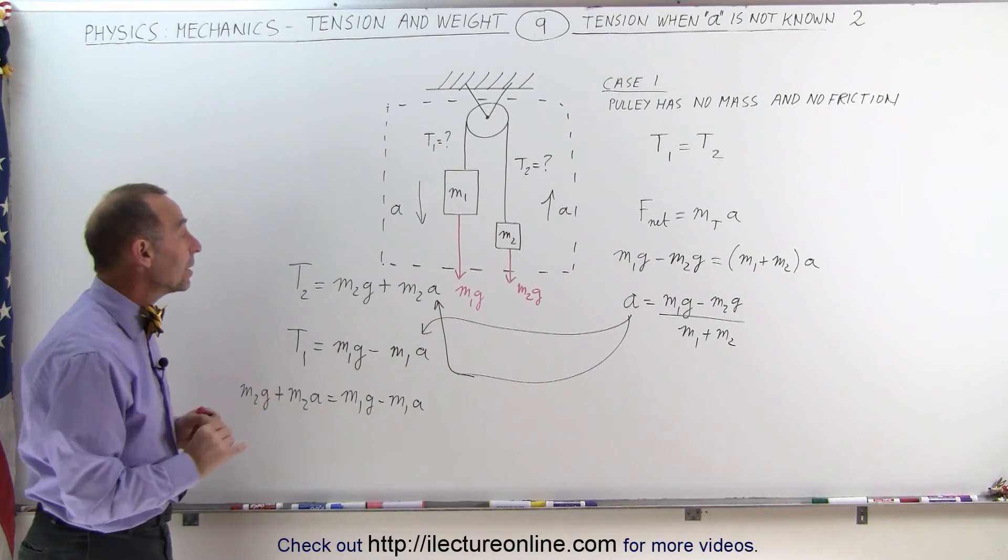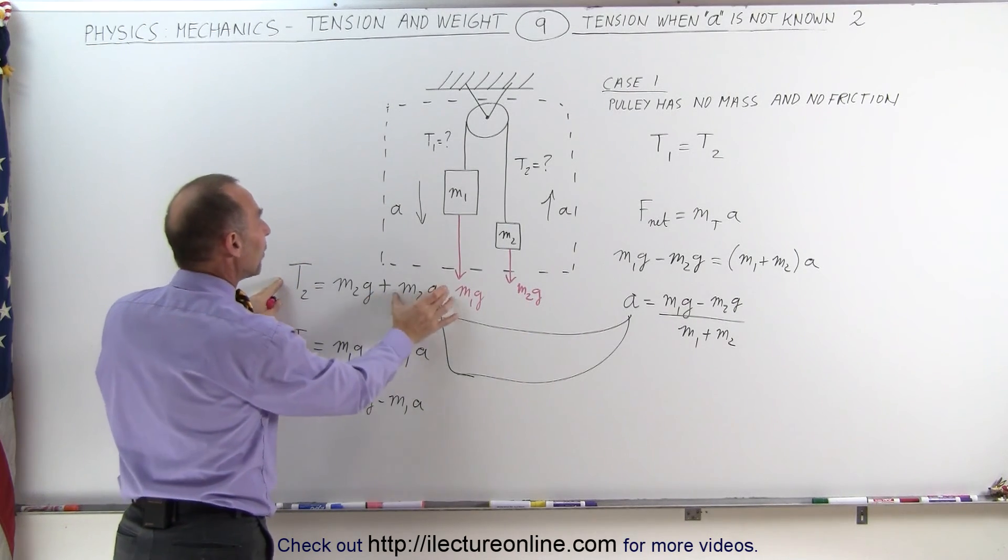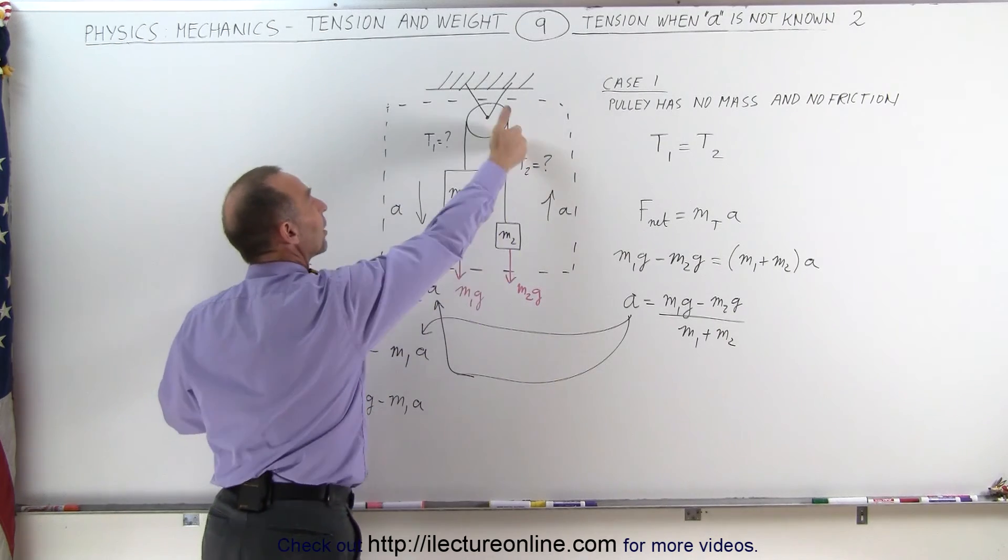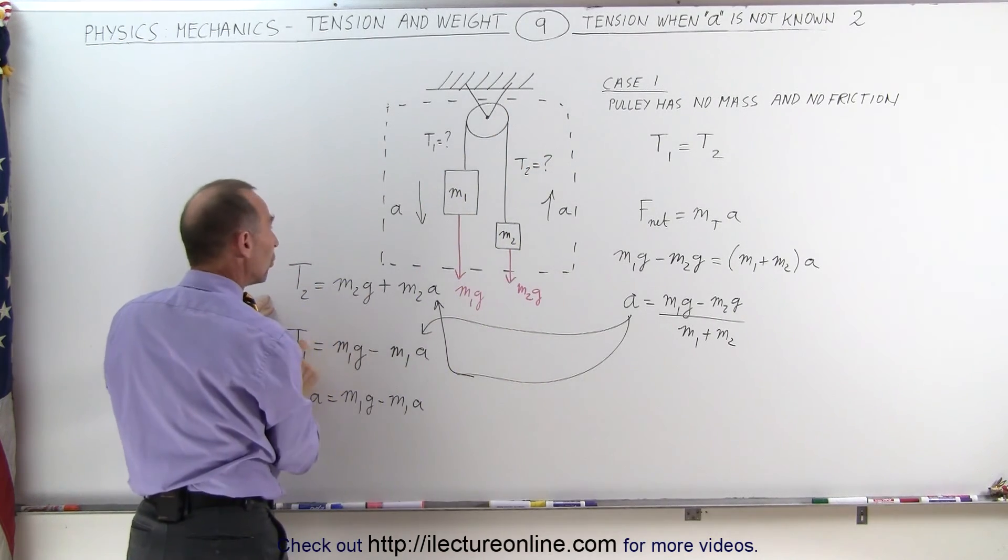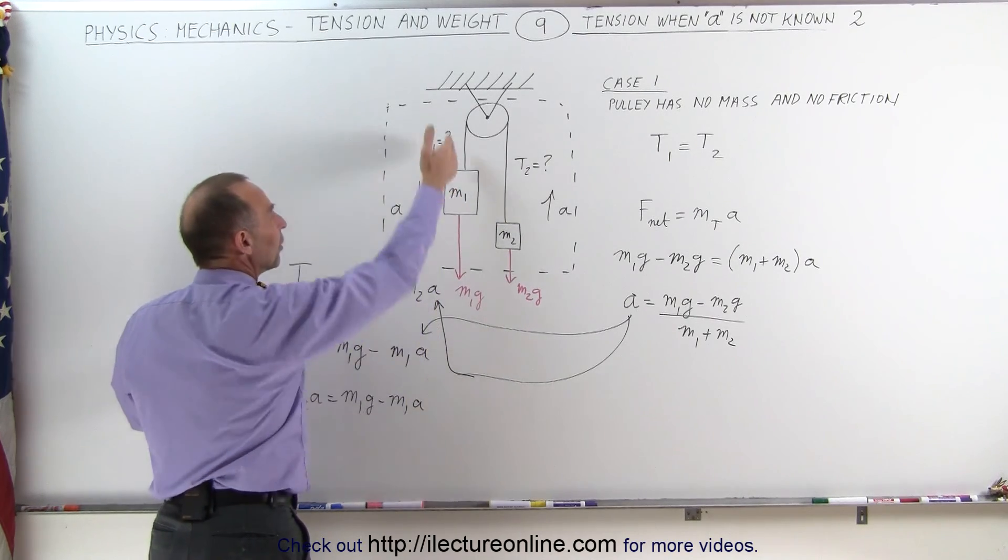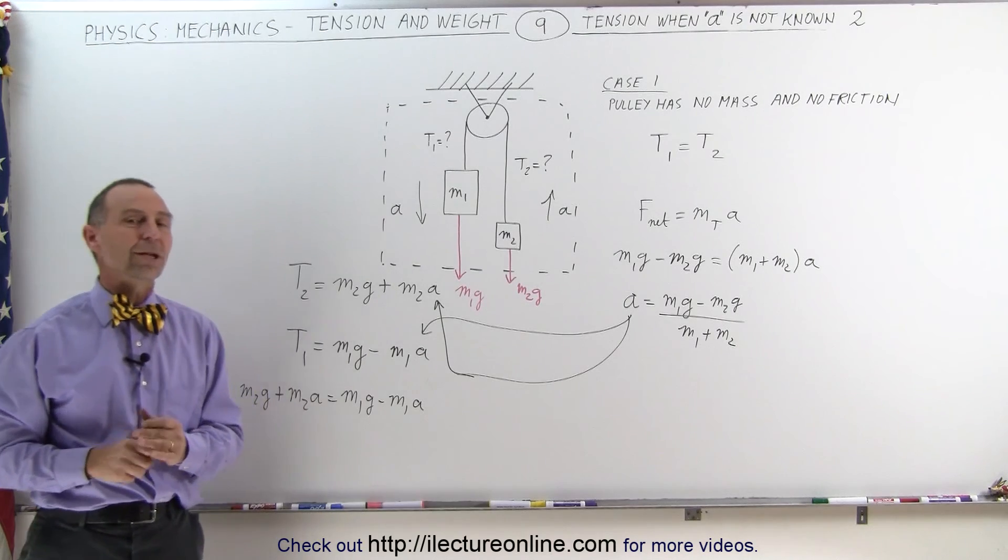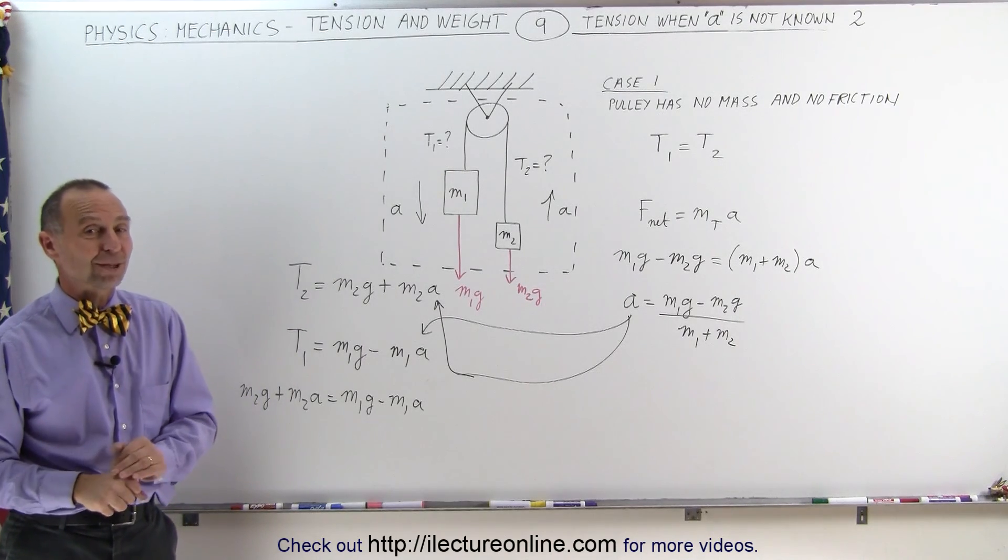Just wanted to show you the technique here that tension 2 is equal to the weight of the object plus the force required to accelerate it upward. Tension 1 can be found by taking the weight of the object minus the force required to accelerate it downward, and those two tensions will then be equal to one another. And that's how it's done.